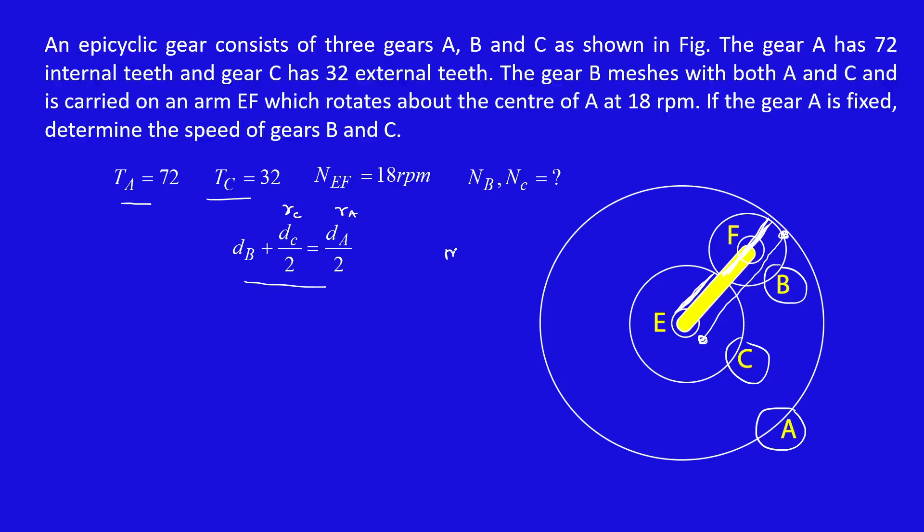We already know that M is equal to diameter divided by number of teeth. Then diameter is proportional to teeth. Here multiply this equation on both sides by 2. 2DB plus DC equal to DA. Then replace D by T.